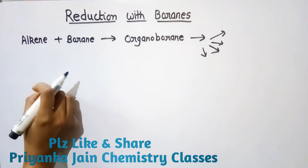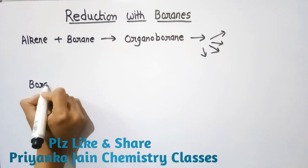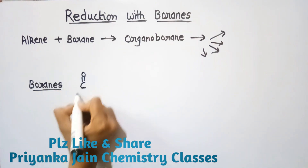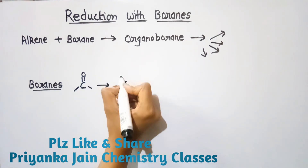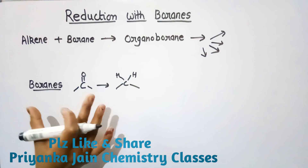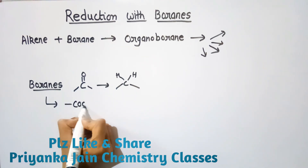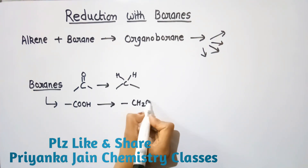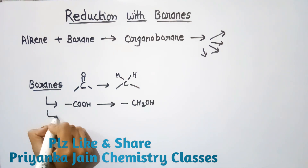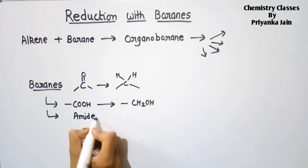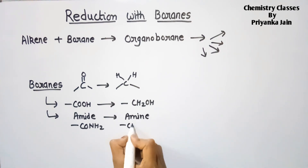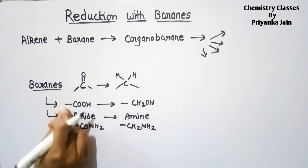The specialty of borane reduction is that boranes are very selective. If we have a carbonyl group, boranes can be used for reduction, but they will not reduce all carbonyl groups. Specifically, the COOH (carboxylic acid) group will be easily reduced to the CH2OH group — converting carboxylic acids to alcohols. Boranes can also convert amides (CONH2) to amines (CH2NH2). These two reactions are easily carried out with boranes.